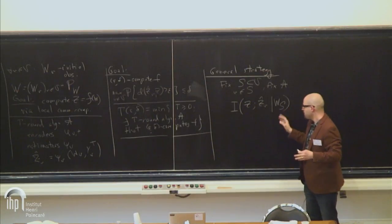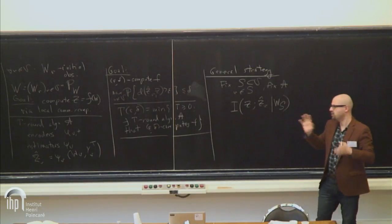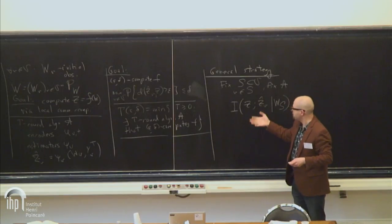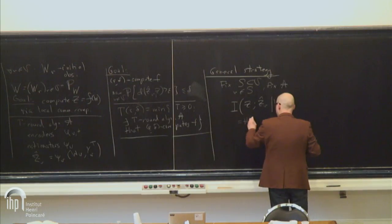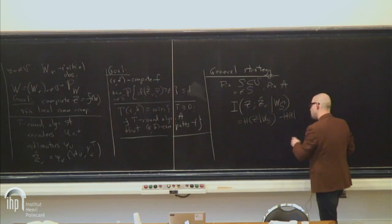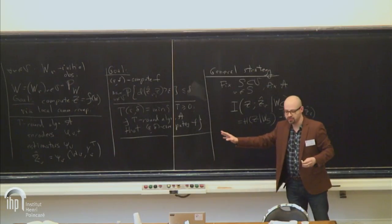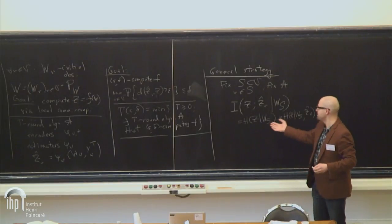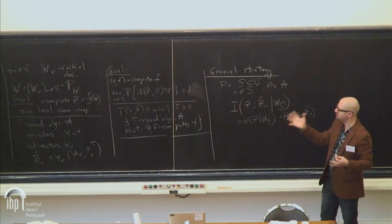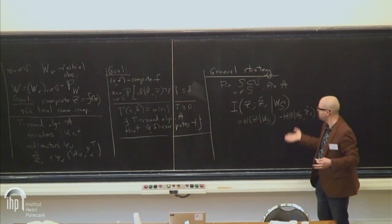Assume that nodes in S somehow manage to spread all the information — all nodes in S know their observations, and all the information they need to compute has to come from S-complement. Assuming everything is discrete, we can write this as the conditional entropy of the function value given just the observations in S, minus the conditional entropy of the function value given the observations and Z-hat_V. This is the reduction of uncertainty about the function value: first you only know the measurements in S, but then you also get information from the complement. We want to lower bound and upper bound this quantity, and from that deduce a bound on computation time.